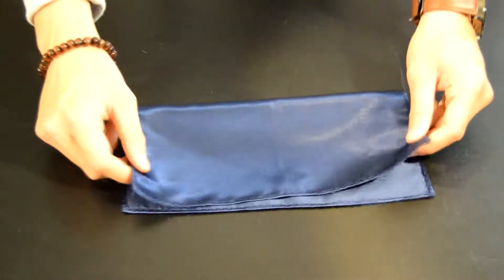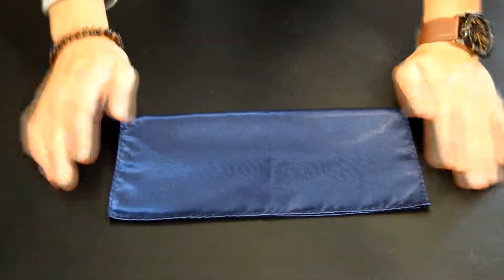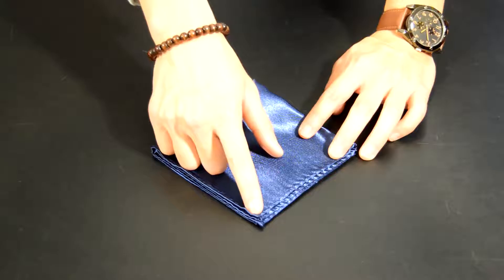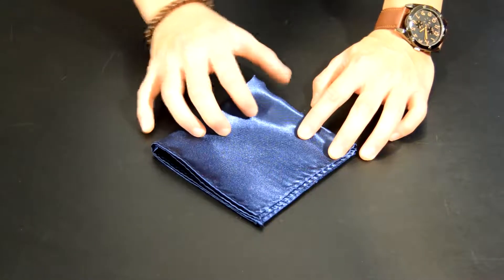Grab both ends, fold it down just like so. Make sure all the creases are nice and crisp. Then you're going to fold it again so it looks like a square, and then you're going to grab the top just like so.